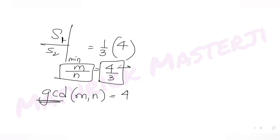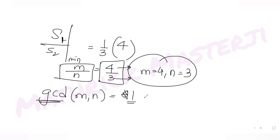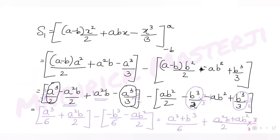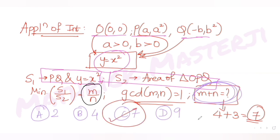With m = 4 and n = 3, m + n = 7. This matches option C, so C is the correct answer. I hope you've understood how to solve this type of question dealing with applications of integration.